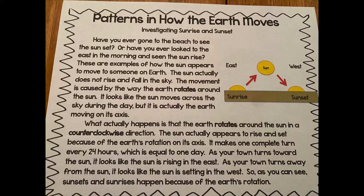What actually happens is that the earth rotates around the sun in a counterclockwise direction. The sun actually appears to rise and set because of the earth's rotation on its axis. It makes one complete turn every 24 hours, which is equal to one day.